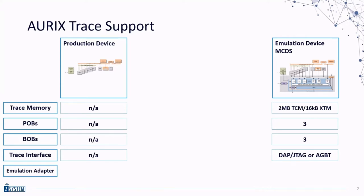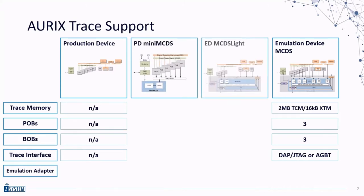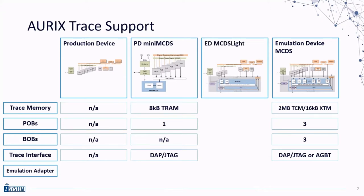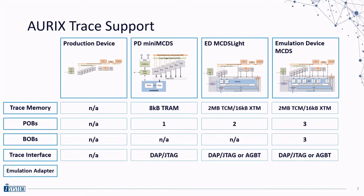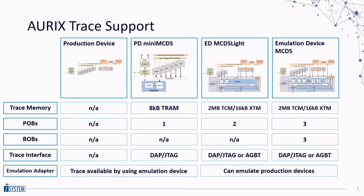There are also two options in between. Some production devices feature a mini-MCDS with a single POB and eight kilobytes of trace RAM. There are also emulation devices with a so-called MCDS Lite, which has two POBs but no BOBs. Besides the missing BOBs and POB, it has the same capabilities as the full MCDS. If your current device is not an emulation device, you can use an emulation adapter to gain access to trace. This information is specifically for TC3XX second-generation Aurix devices, though the situation is similar for TC2XX devices.